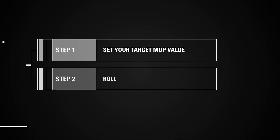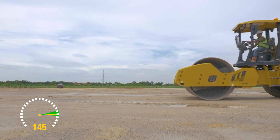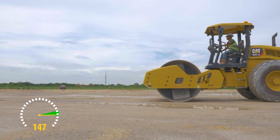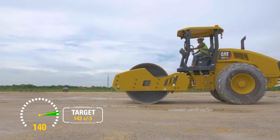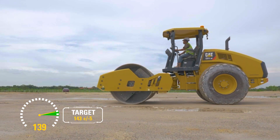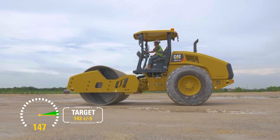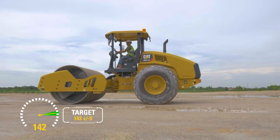Step 2: Roll. Compact the soil using the noted MDP value as your target. Continue to roll until the MDP reading reaches plus or minus five units of your MDP target value.